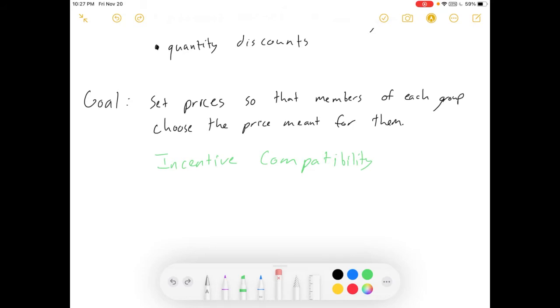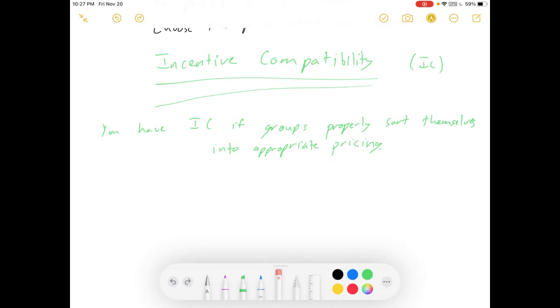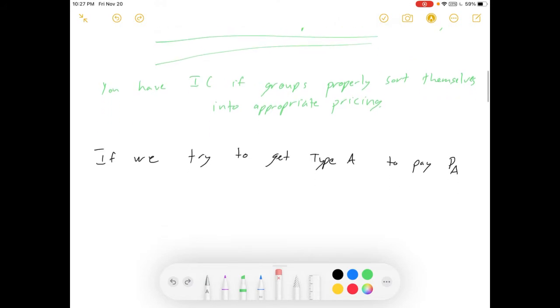And so, we're going to rely on this concept called incentive compatibility. And incentive compatibility, or as I'm going to call it from now on, just IC, is that you have IC if the groups properly sort themselves into the appropriate pricing. They will self-select. They will choose the one we want them to go to. If so, then our pricing scheme is incentive compatible.